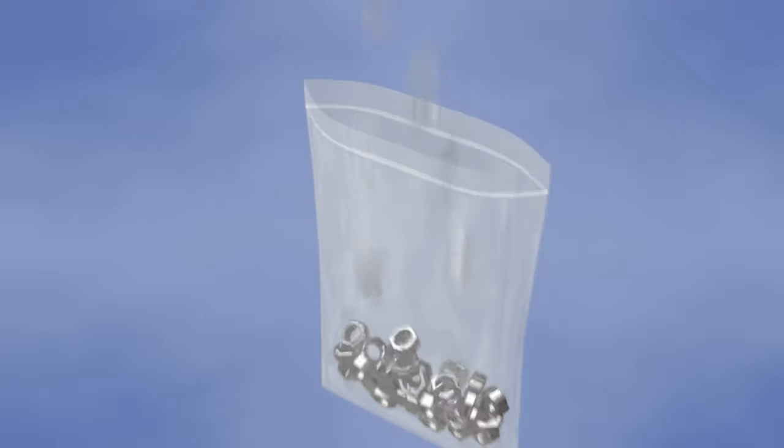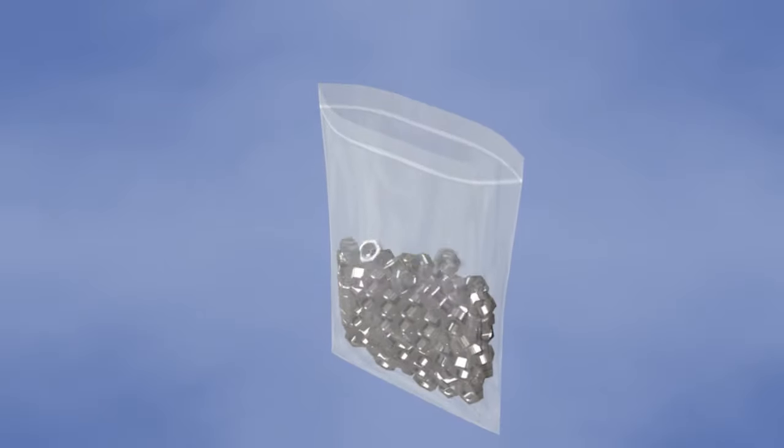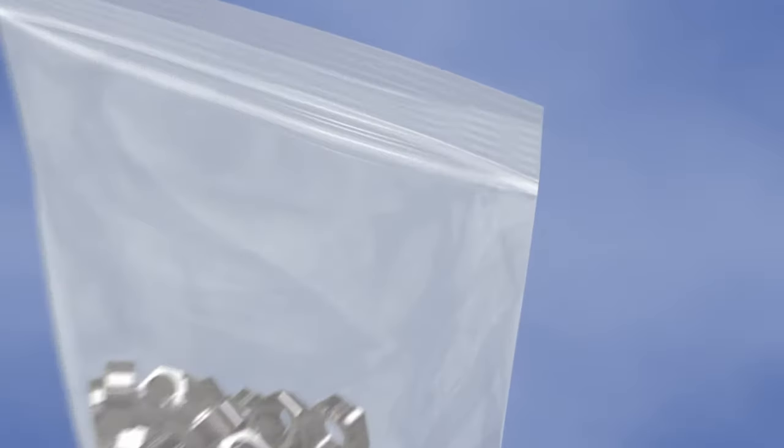ClearZip lock top bags feature an offset lip for easy opening. They are leak-resistant, and some larger and thicker bags feature a reinforcing ultrasonic seal on the zipper's edge for added strength.